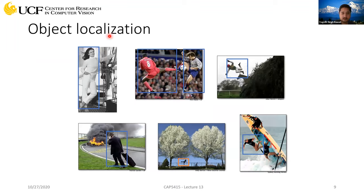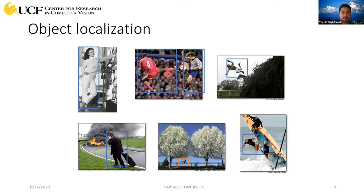Now, object localization — also known as object detection — is not only saying whether the particular object is present or not. You also have to determine exactly where in the image the person is located. You have to draw a bounding box around the person. If there are multiple instances, you draw multiple boxes. A perfect algorithm for an image with three people will draw three bounding boxes.